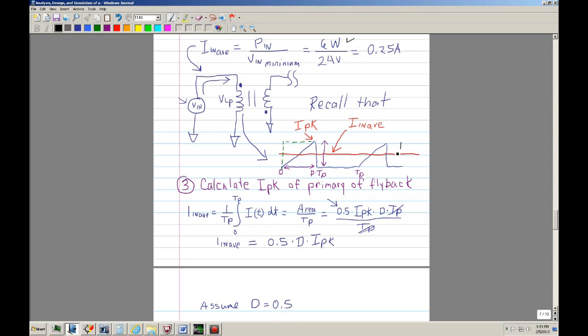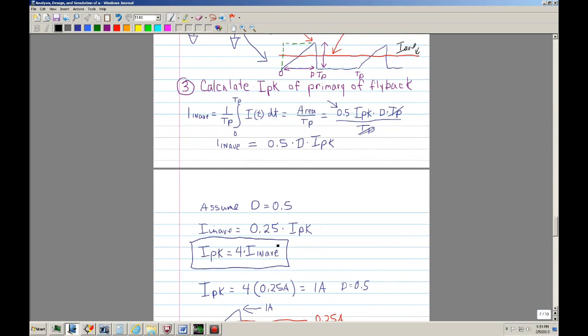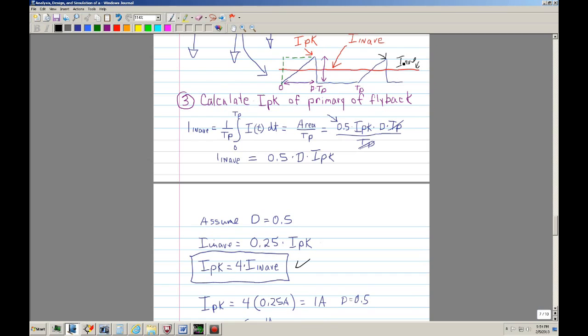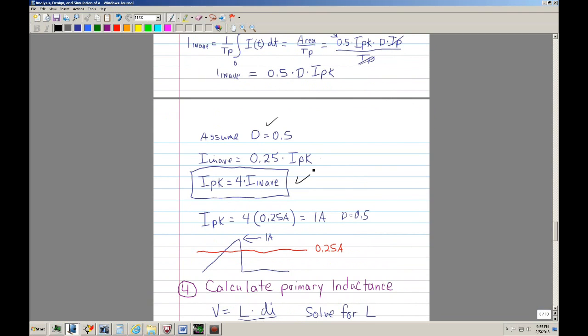All you have to do is 6 watts divided by 24 volts, which is your input voltage. We know that you're going to have an average current of 250 milliamps. We also did a relationship that if you know what the average current is and that the input current would have this type of sawtooth or ramp, there's a relationship that if you know what the average current is and you know the duty cycle, then you can calculate the peak.